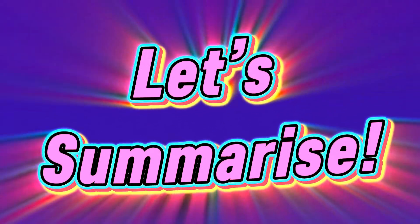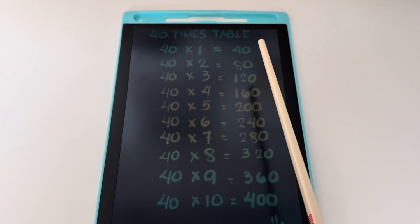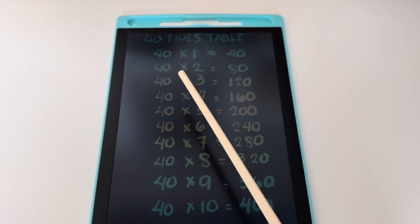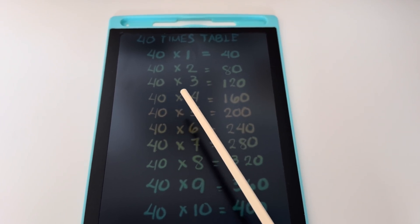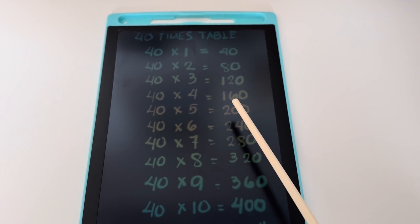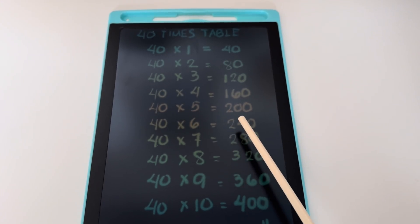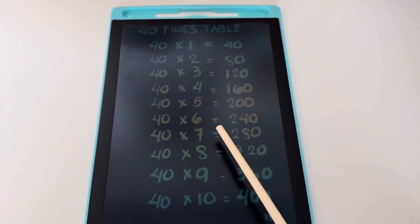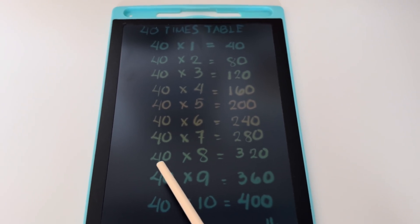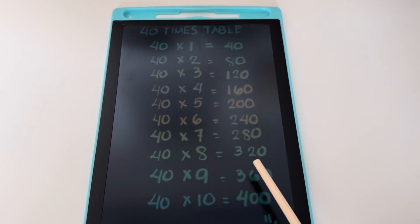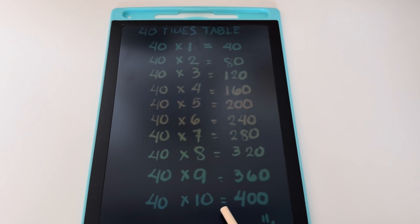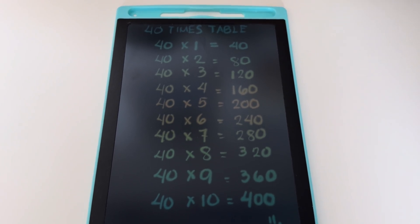Let's summarize the 40 times table. 40 times 1 is equals to 40. 40 times 2 is equals to 80. 40 times 3 is equals to 120. 40 times 4 is equals to 160. 40 times 5 is equals to 200. 40 times 6 is equals to 240. 40 times 7 is equals to 280. 40 times 8 is equals to 320. 40 times 9 is equals to 360. And 40 times 10 is equals to 400.